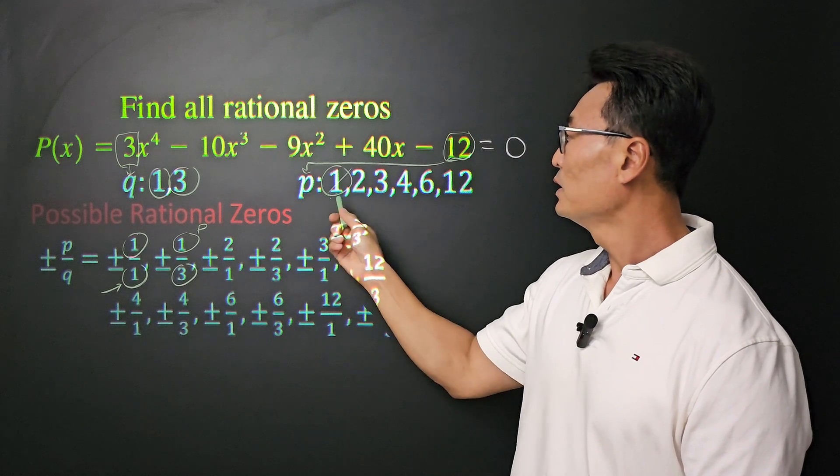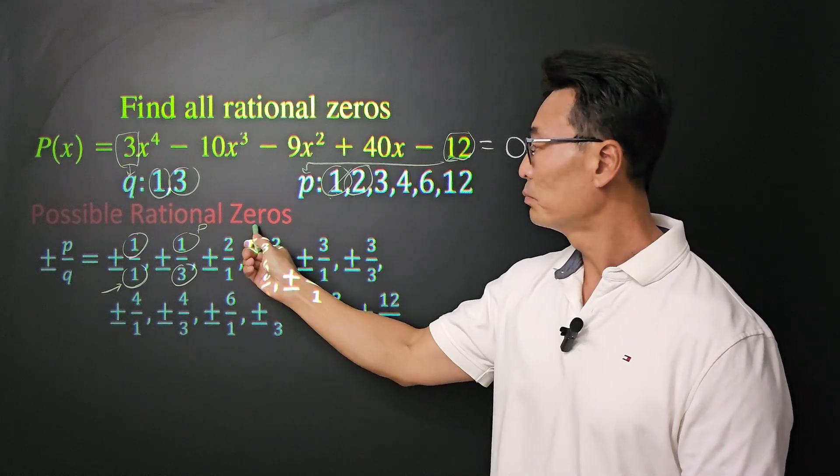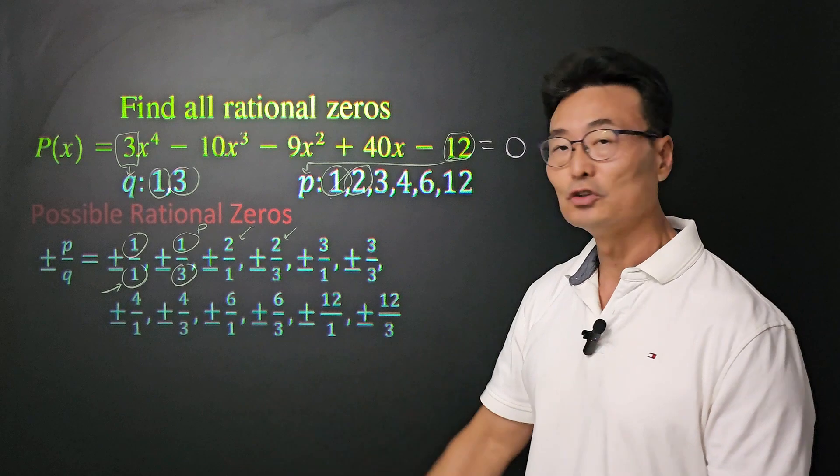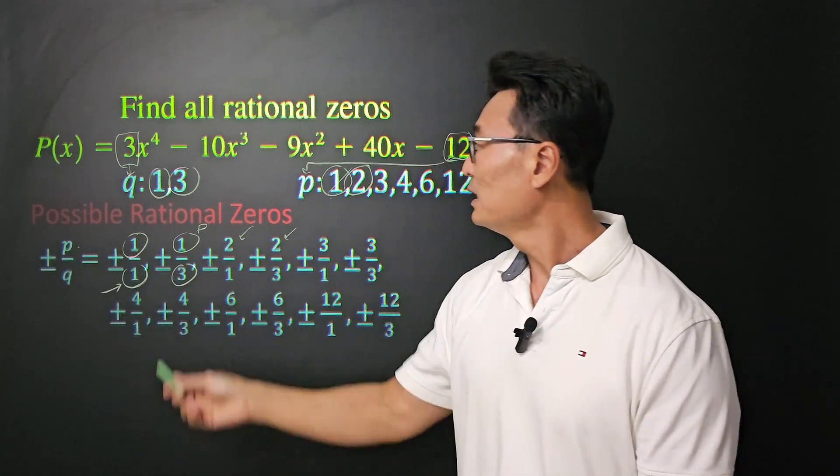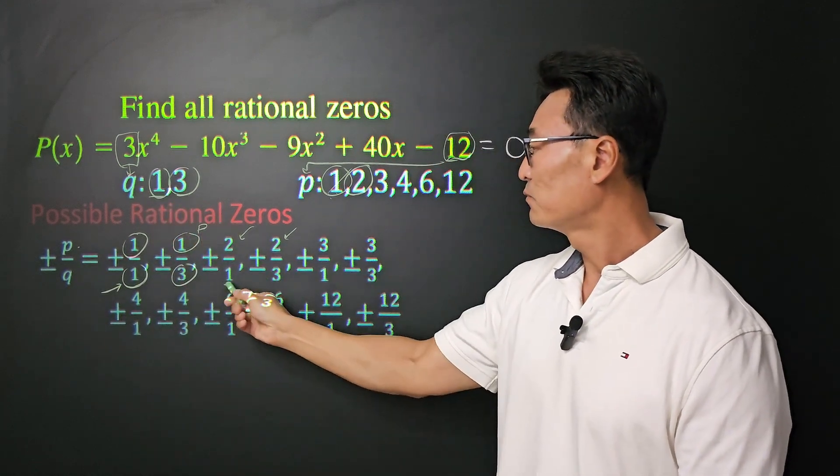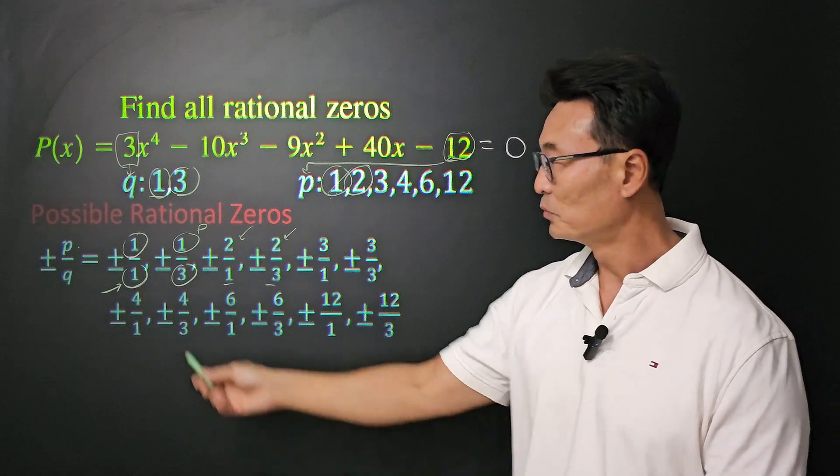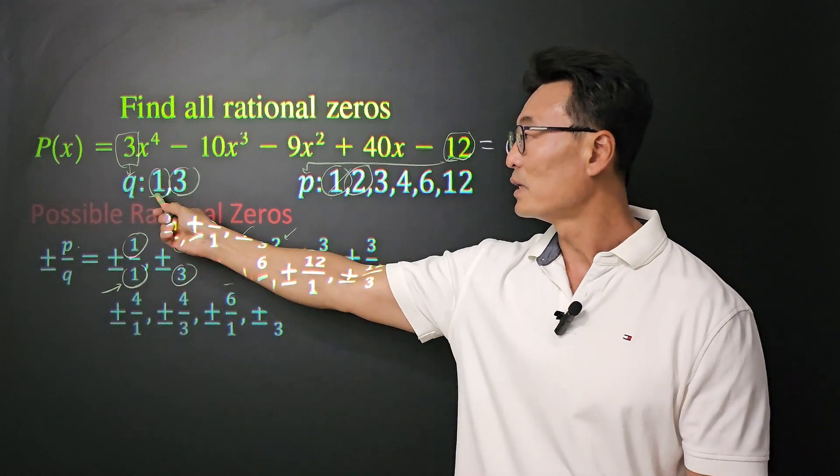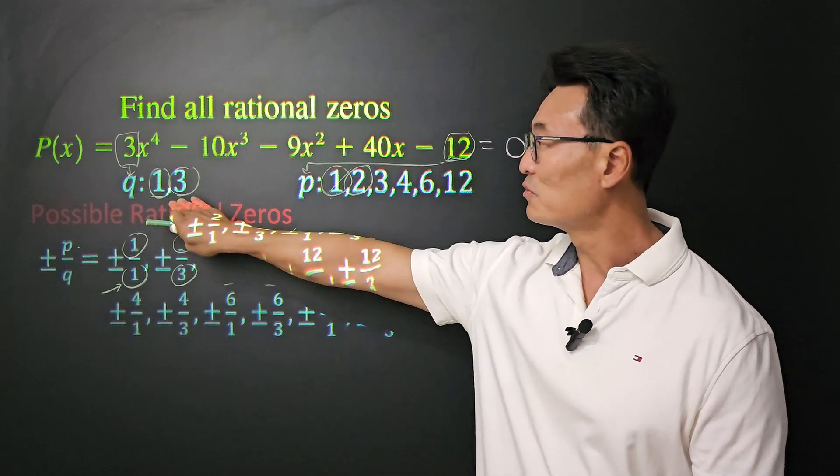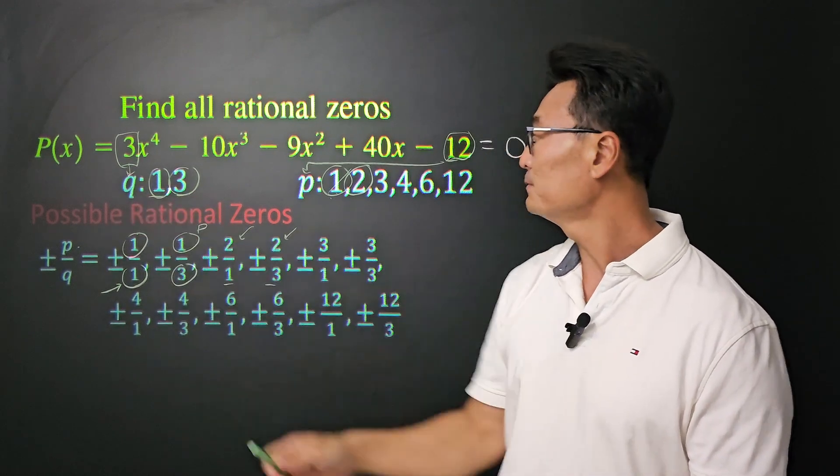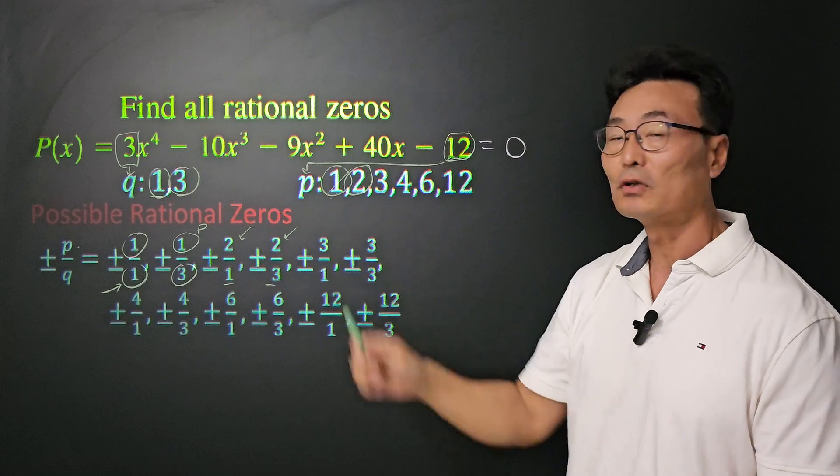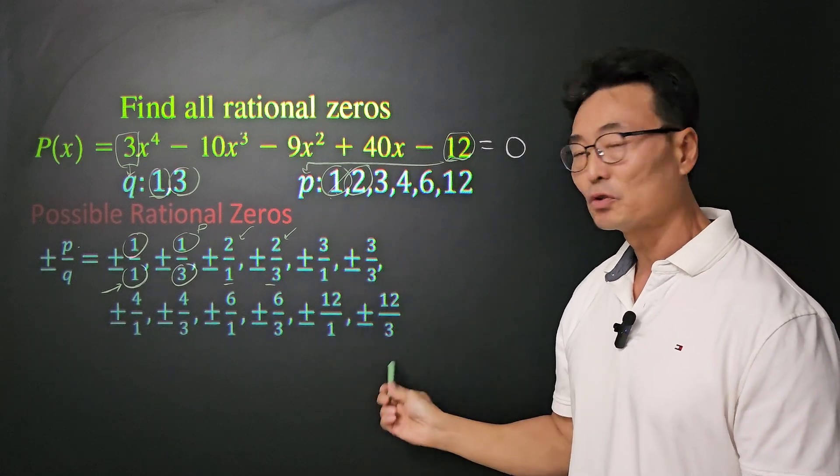Next, we're done with the 1, and then we're going to take the 2, plug it in to the numerator for the value of p, and then we're going to be using the 1 and the 3 for the denominators. Notice the plus minus. Altogether, because we have two values of factors for q and 6 factors for the value of p, we have a total of 12.